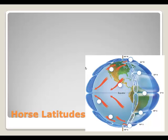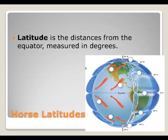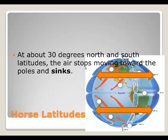The horse latitudes were named by sailors. They are two areas of calm, sinking air found at 30 degrees north and south. Latitude is the distance from the equator measured in degrees. In both of these areas, sinking air creates regions of high pressure. Areas of high pressure do not allow the formation of clouds, so there is not much condensation there, and the wind is very light and variable.